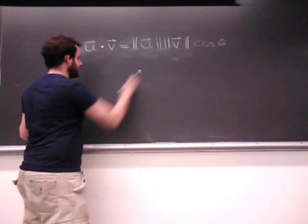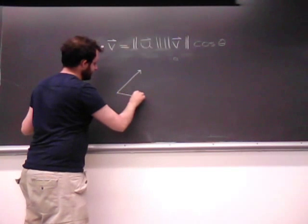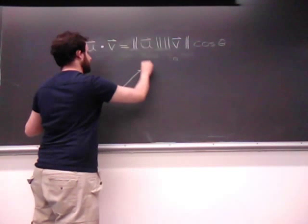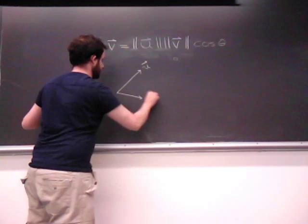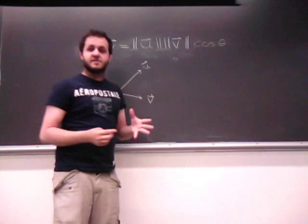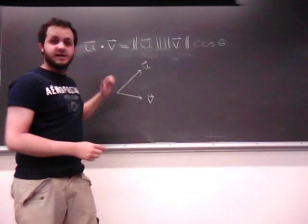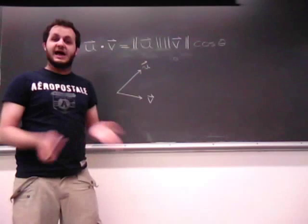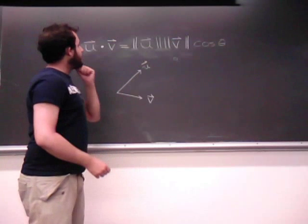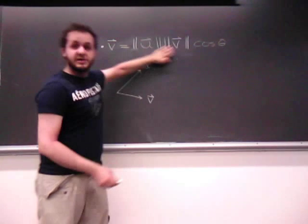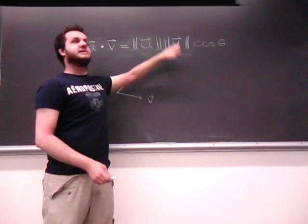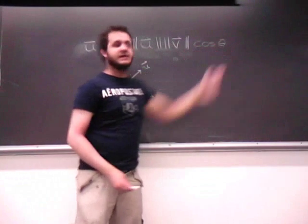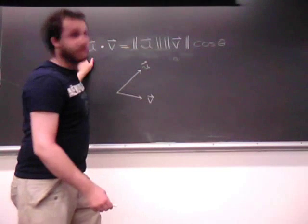So what we want to try to understand is what does this actually mean geometrically. So if I have a vector u here and a vector v, I want to geometrically understand what the dot product of u and v actually is. Well, geometrically we want to use this formula because this formula is the one with the geometry in it, not this one.